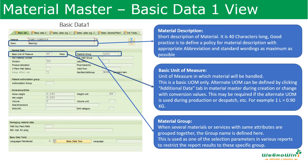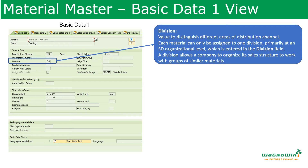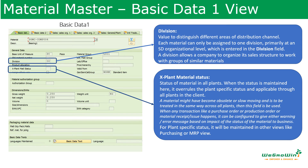Next is the material group. When we have different materials or services with the same attributes, they can be grouped together and defined here. The material group is used as a selection parameter in various reports to restrict results to a specific group. Division is also defined here — it is used to distinguish different types of distribution channels. Each material can be assigned to only one division, and this is primarily defined at the SD organization level.